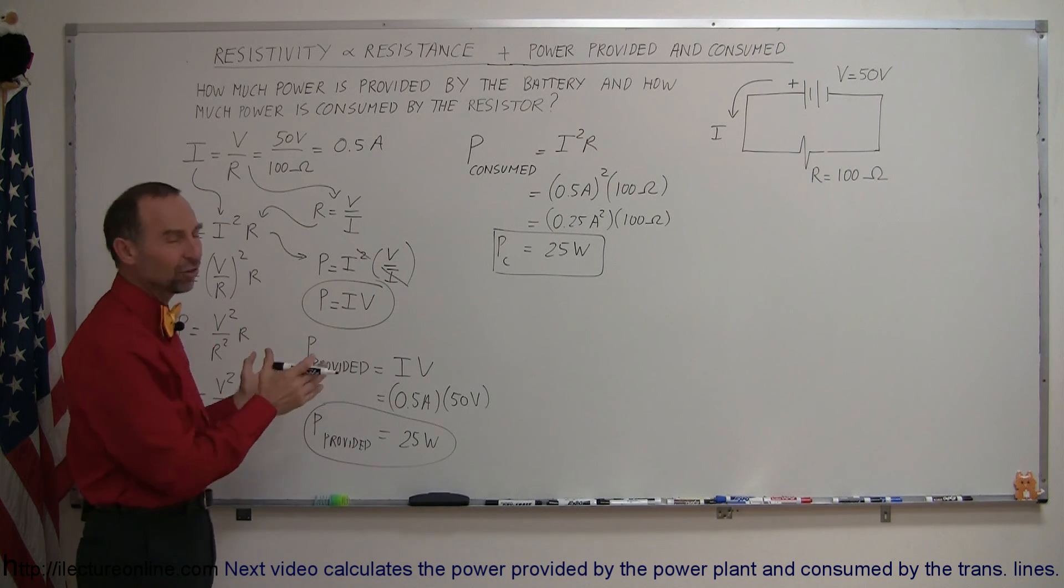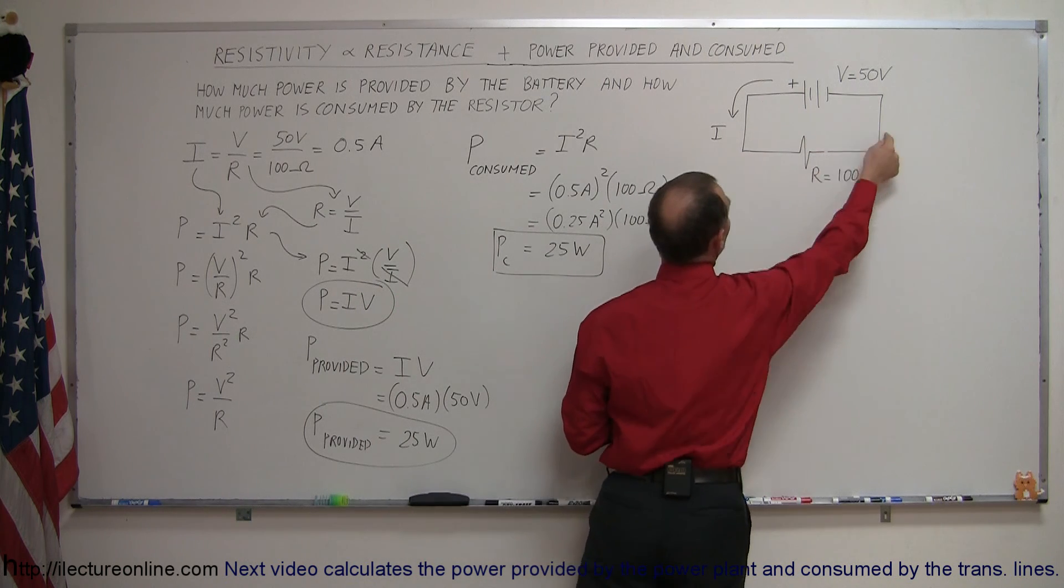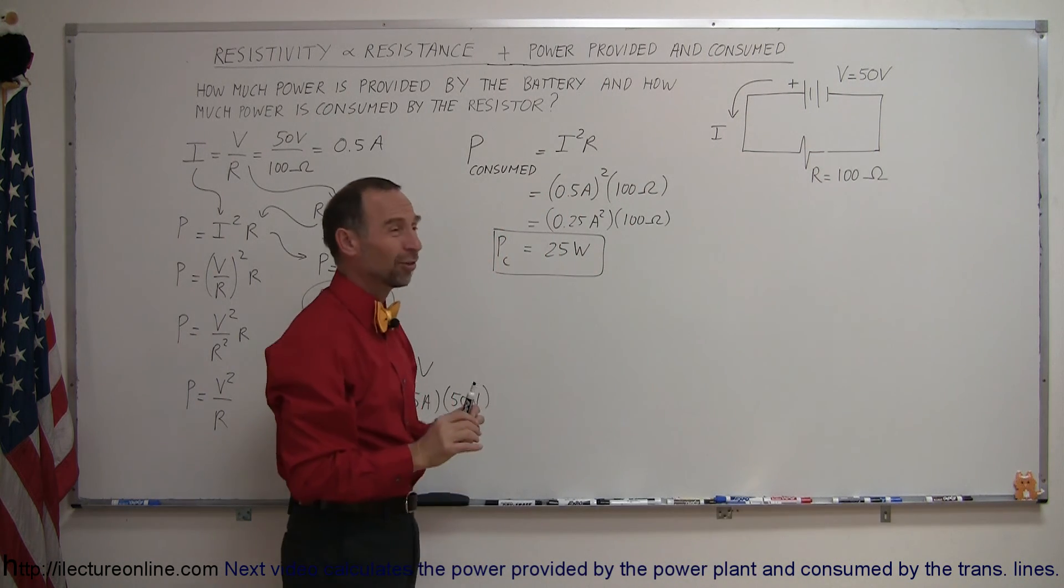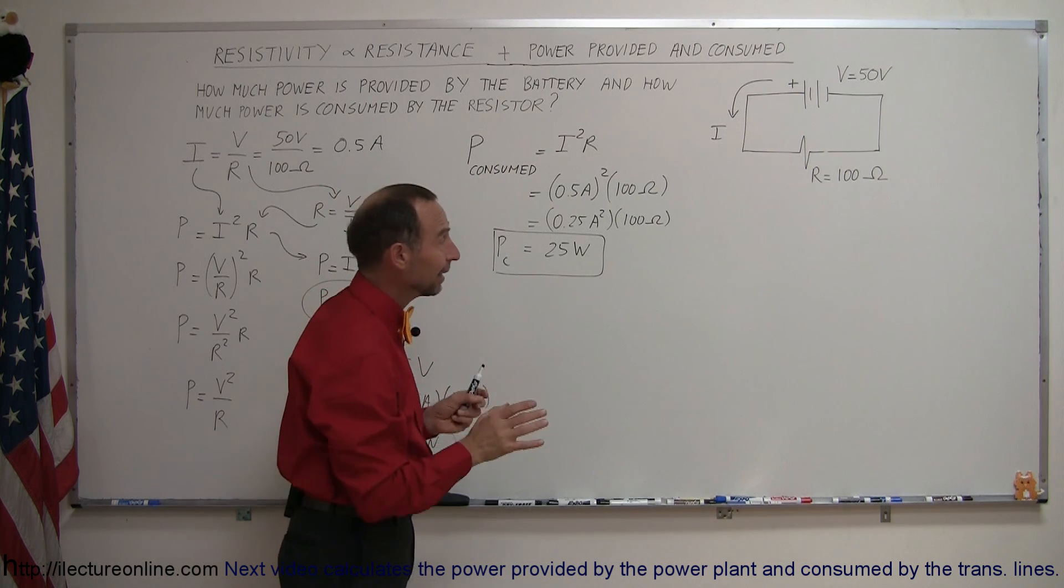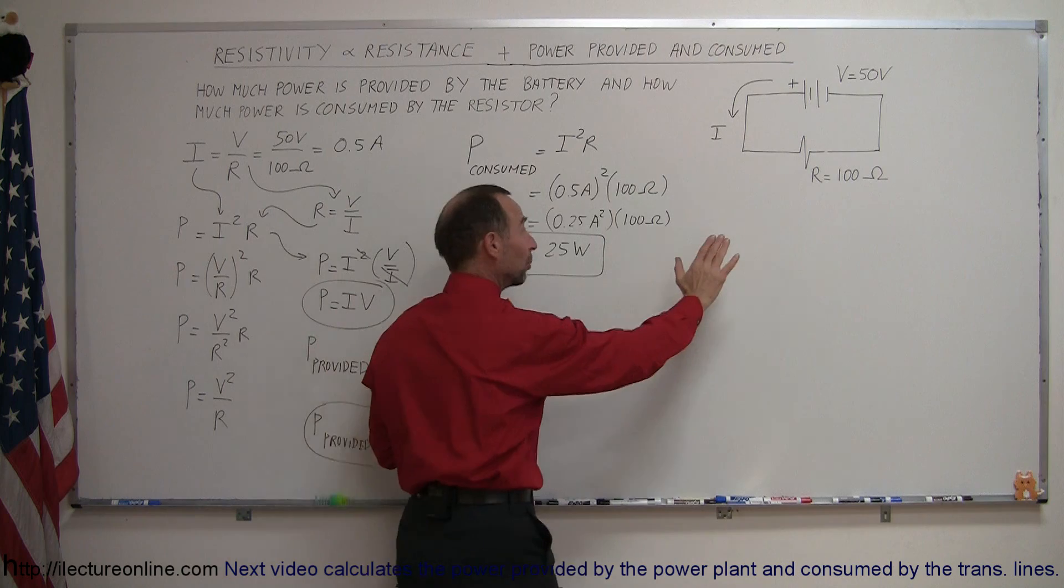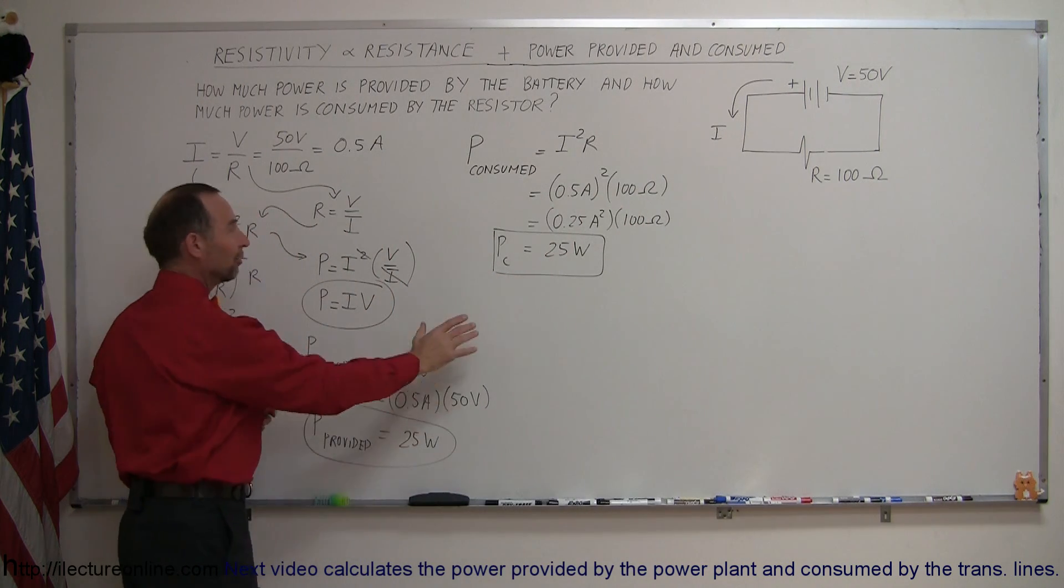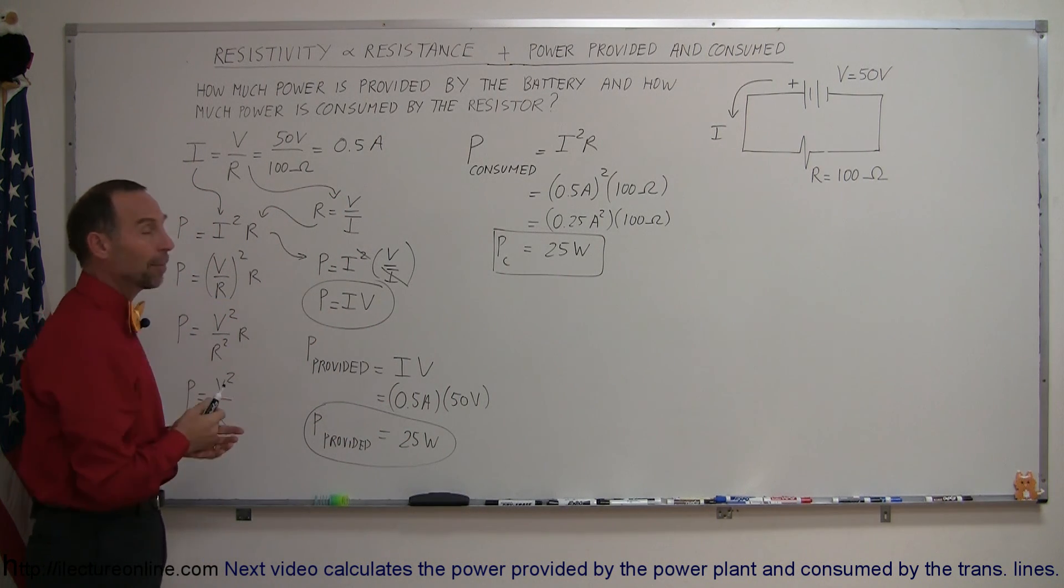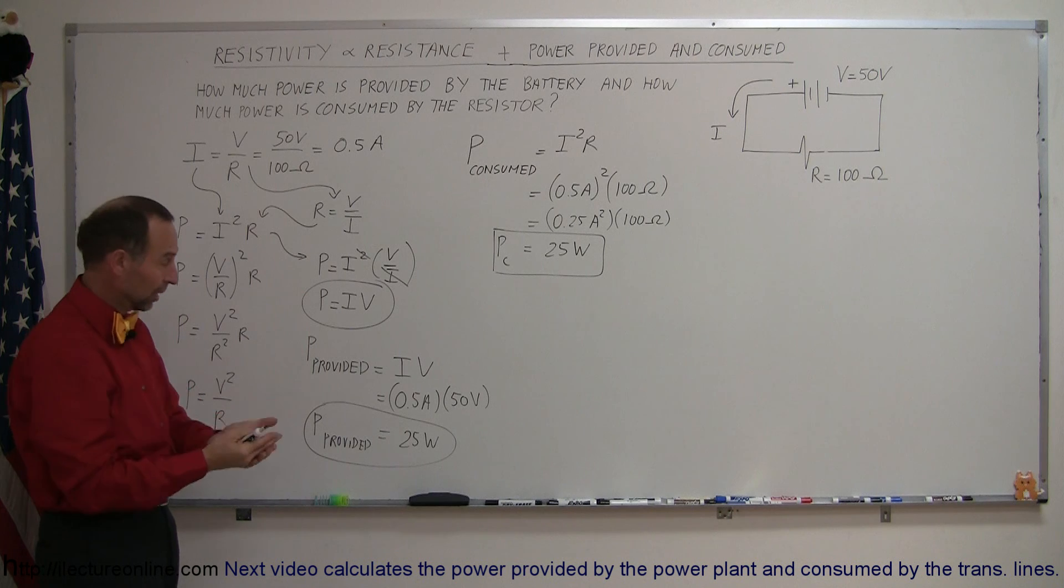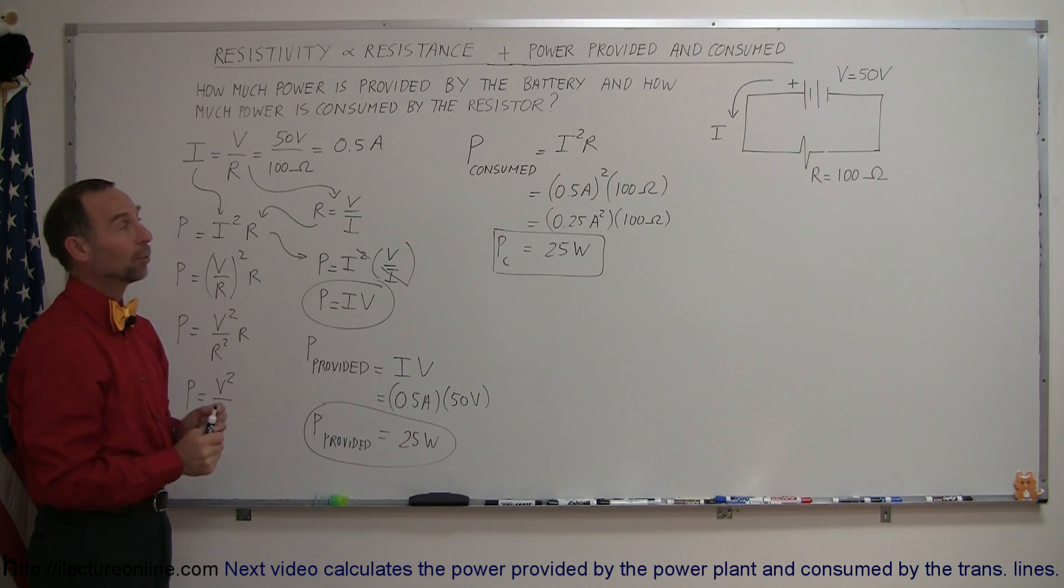And that's, of course, an ideal situation because we've ignored the power consumption of the wire. Now, the wire has a very small resistance, so it's not going to consume a lot of power. But nevertheless, ideally, this is correct, but in the real world, the resistance would not quite consume all of the power because some of it would also be consumed by the wire. But to give you an example of how to calculate power consumed and power provided in the circuit, here's a good simple example. And now we're going to show an example where that's not quite the same.